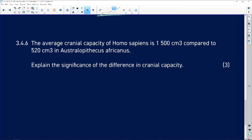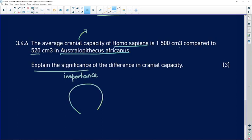The average cranial capacity. So we're looking at the inside of the skull of Homo sapiens is 1,500 cubic centimeters. Compared to only 520 cubic centimeters in Australopithecus africanus. Explain the significance. What is the importance of this difference? Well, a bigger cranium can host a bigger brain, whereas a smaller cranium, we've got a much smaller brain. And that is the significance.